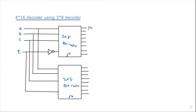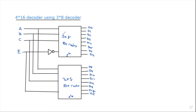The outputs from the two decoders are D0, D1, D2, D3, D4, D5, D6, D7 from the first decoder, and D8, D9, D10, D11, D12, D13, D14, D15 from the second decoder, giving us all 16 output lines.